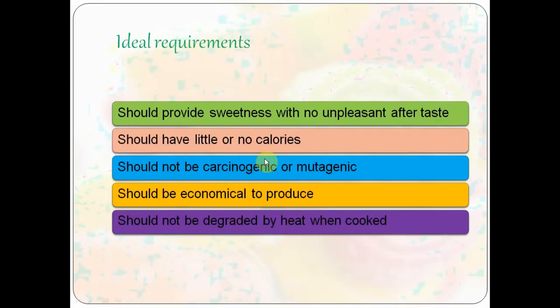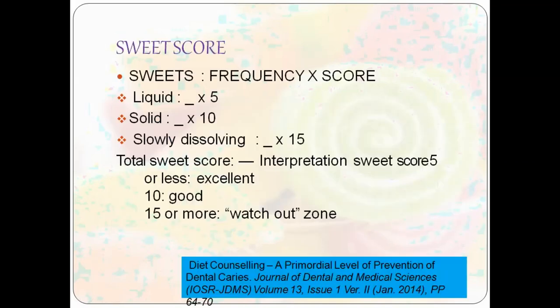Basically, any ideal sweetener should have sweetness with no unpleasant taste, no calories, should not be carcinogenic or mutagenic, should be economical, and should not be degraded by heat when cooked. Clinically, we use the sweet score, which is calculated by multiplying frequency by score.